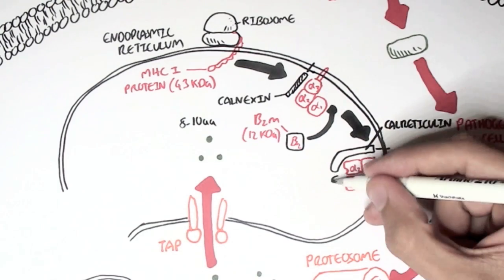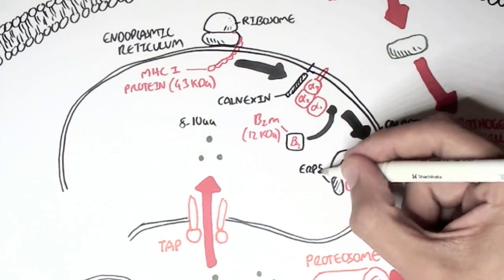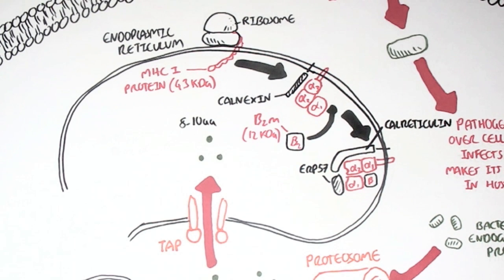At the same time, there will be other proteins attaching on this MHC class 1, specifically calreticulin and ERP57. What do these proteins do? Calreticulin and ERP57 will essentially cover the binding groove, the binding site of the MHC class 1, which will prevent peptides, antigens, to interact with the binding site of MHC class 1.